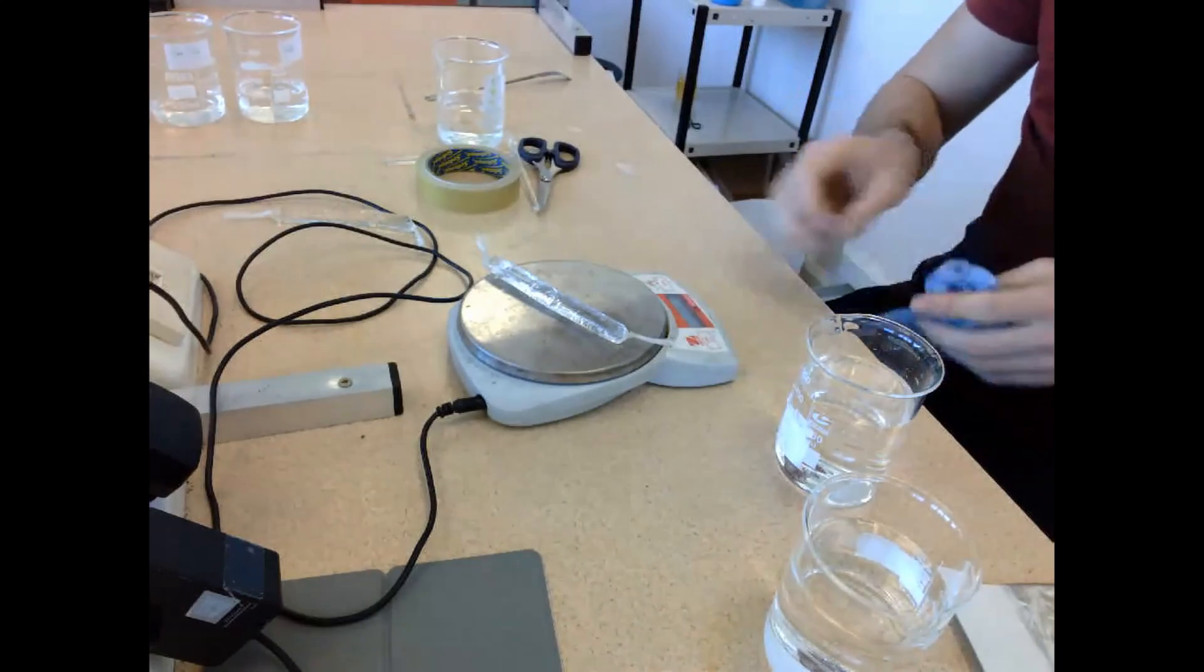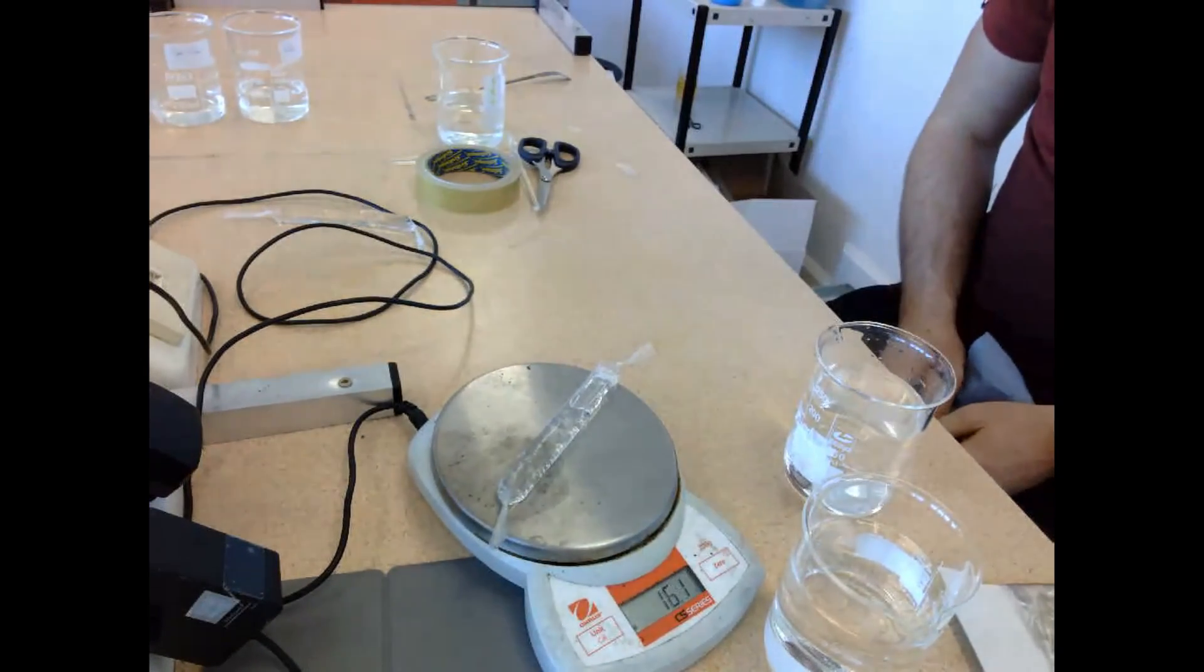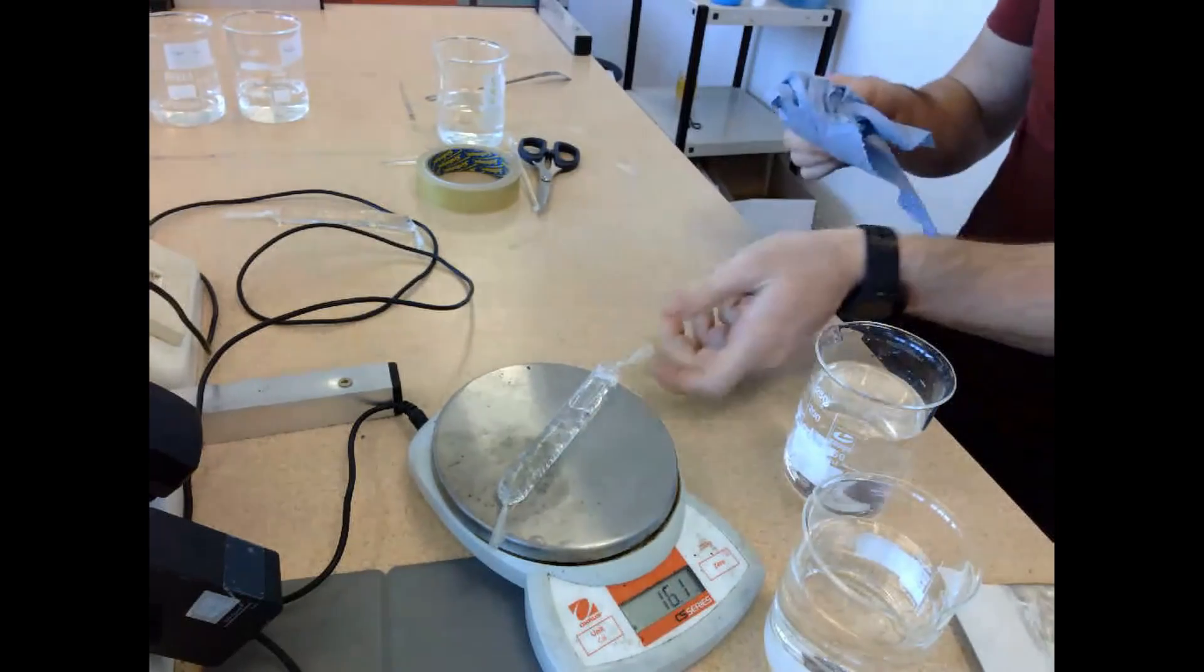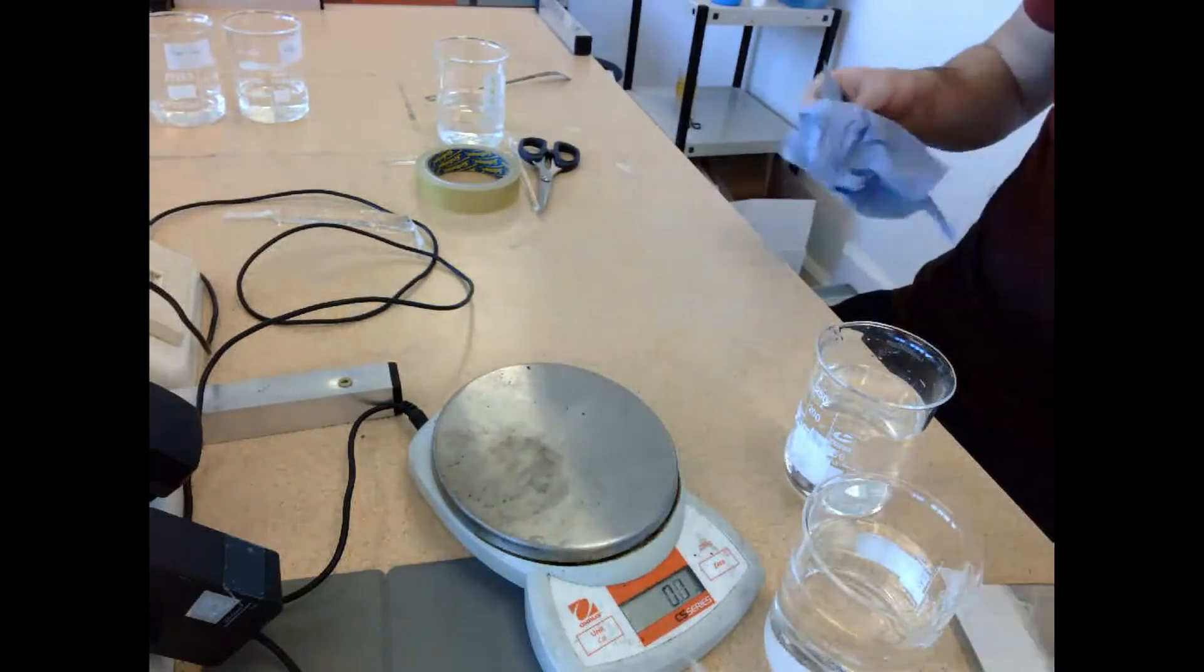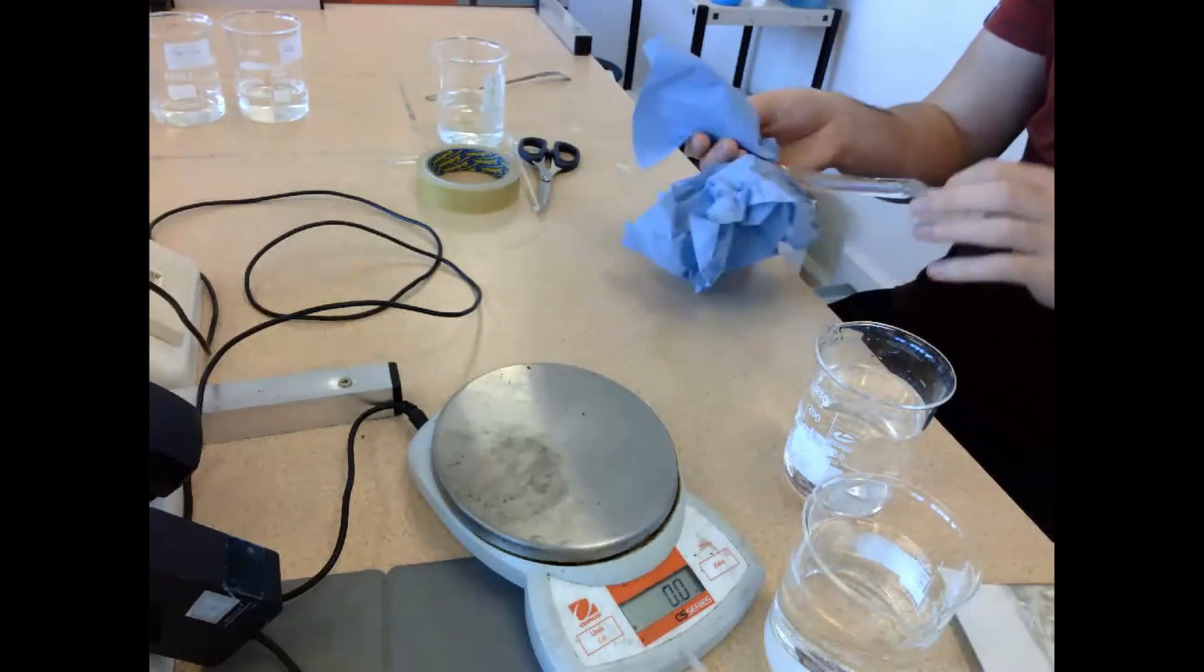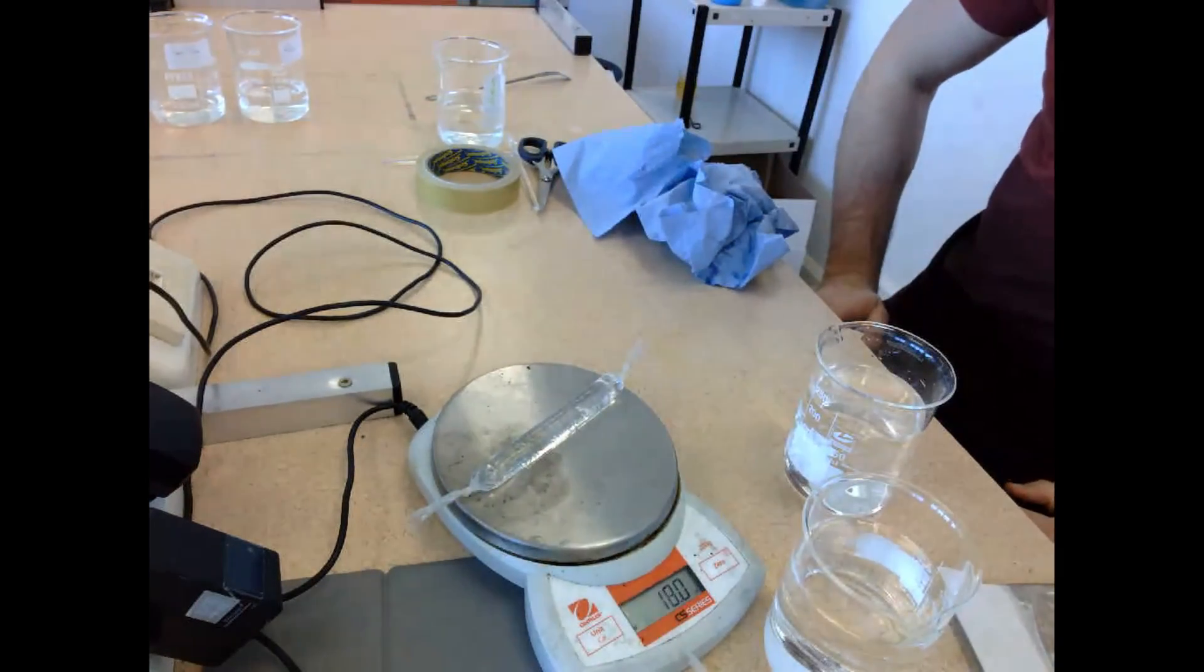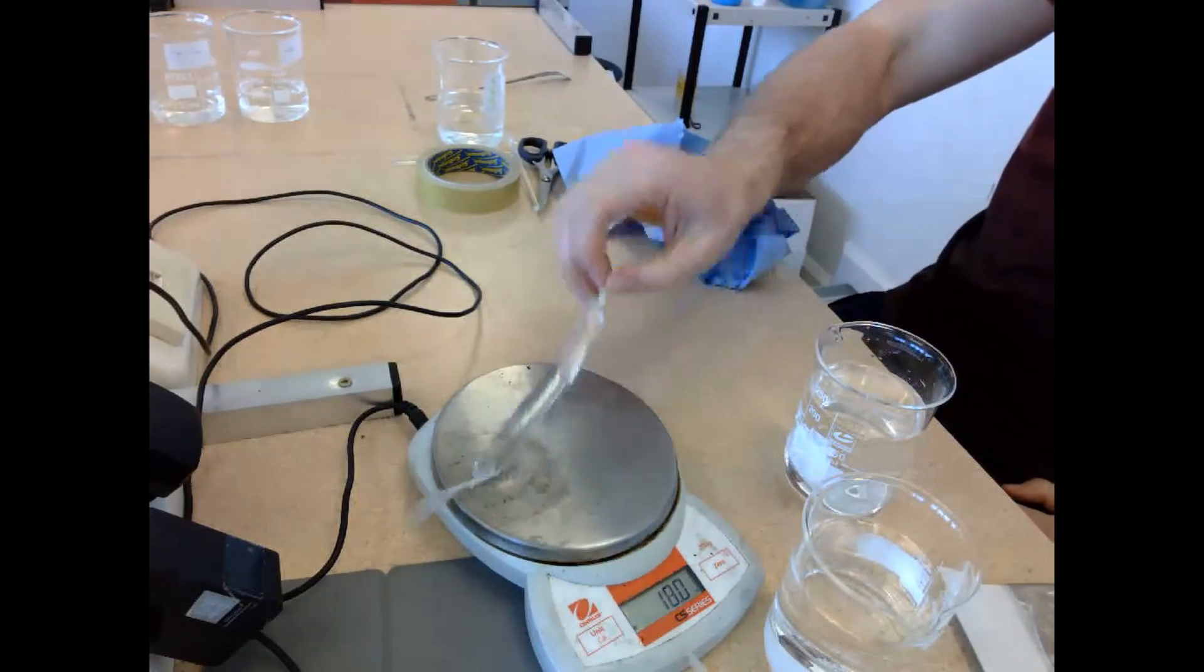It is 16.1 grams for visking tubing A. That shouldn't really change - it should be the same at the end of this process. Then visking tubing B, I'm just going to dry it off, place it on the balance, and it comes back at 18 grams.